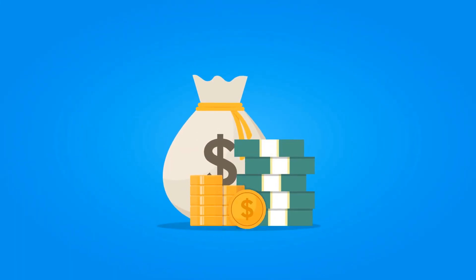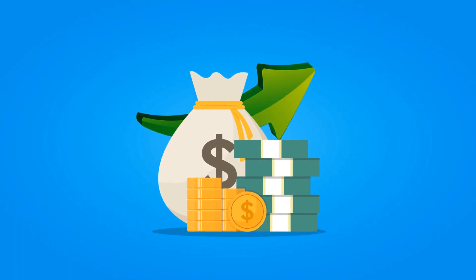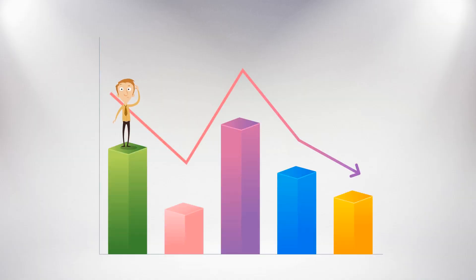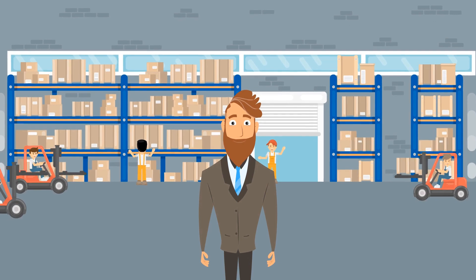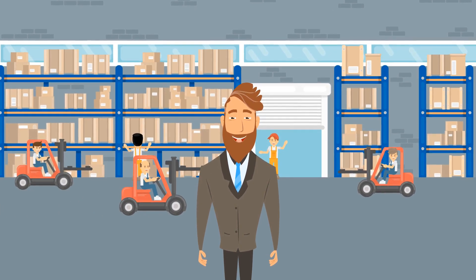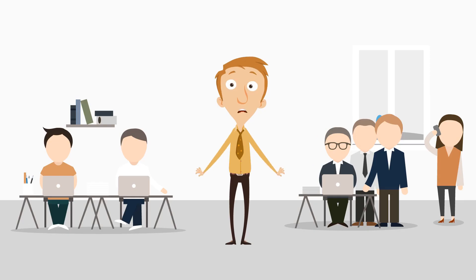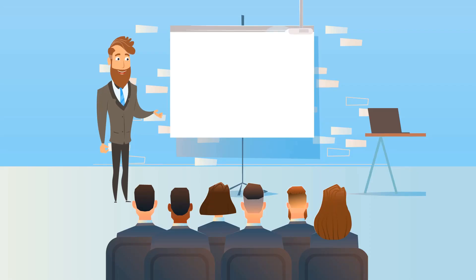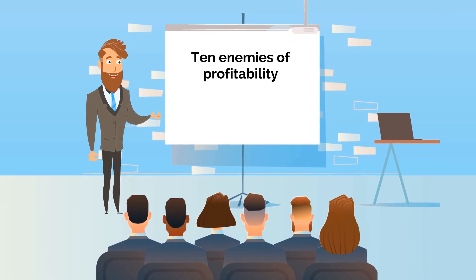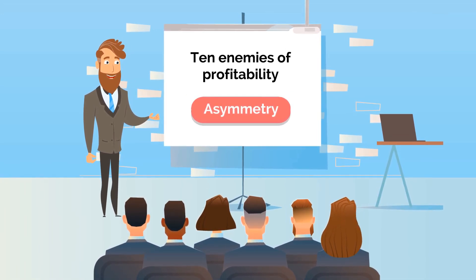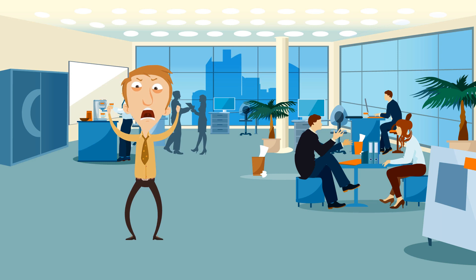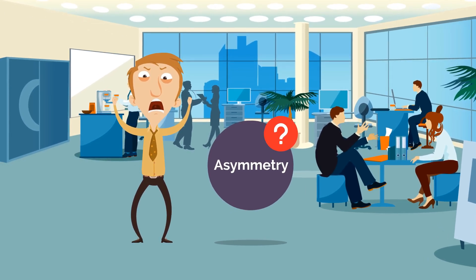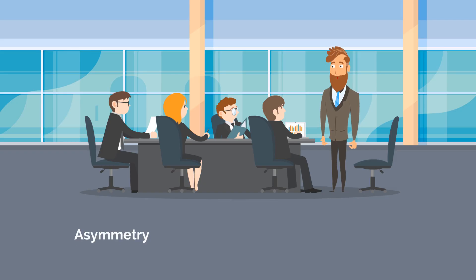Are your sales consistent day after day, hour after hour, or do your business demands fluctuate? Does your supply of goods and materials in and out of your business work like clockwork, or are there ebbs and flows? If you have either of these problems, you are likely experiencing one of the 10 enemies of profitability that we refer to as asymmetry.